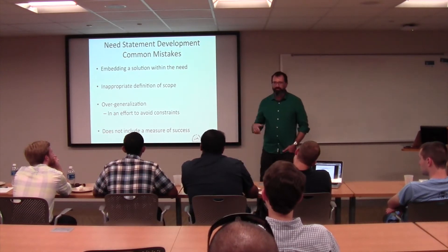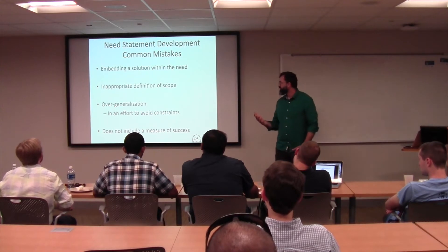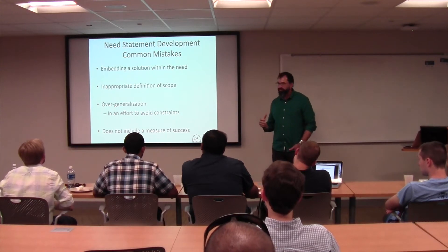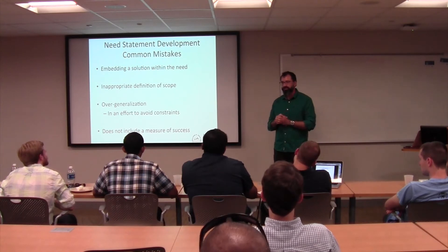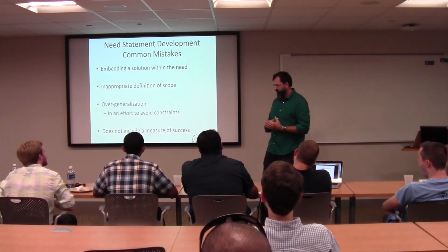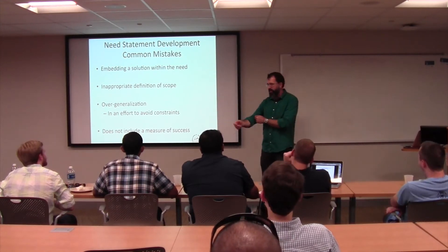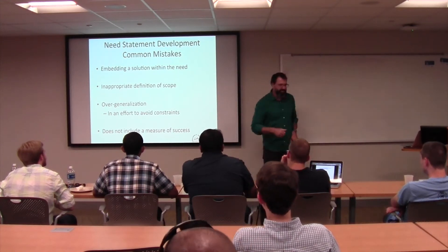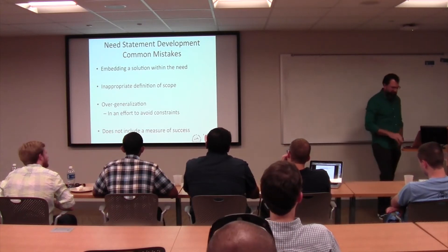The mistakes seem obvious: putting a solution into the need seems obvious. Inappropriate definition of scope — how big is the thing you're trying to solve? You could say we're going to cure cancer; there's no solution in that, it's just too big. Overgeneralization — it works for everybody, everywhere. And it doesn't include a metric for success. It has to include a metric for success.